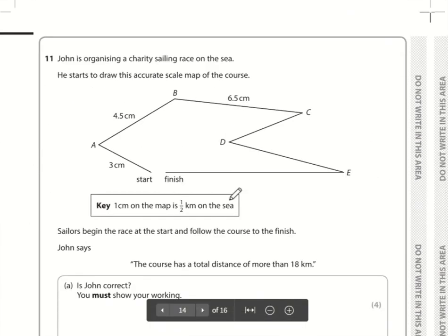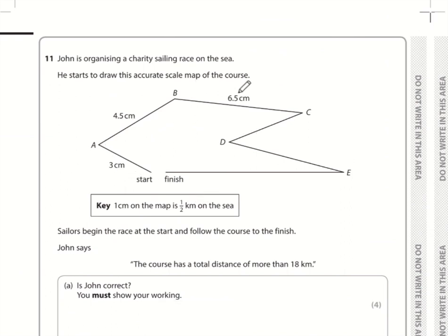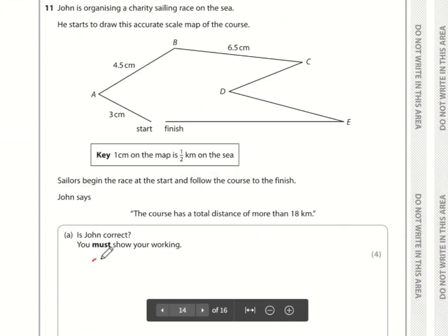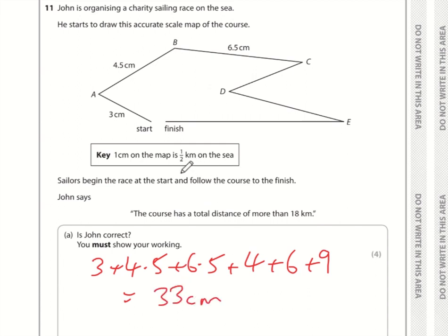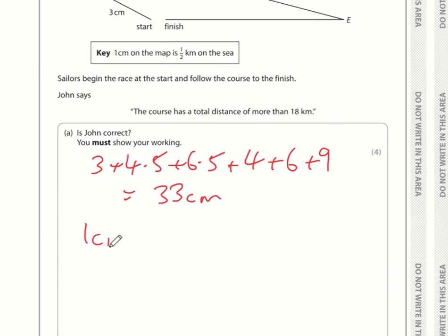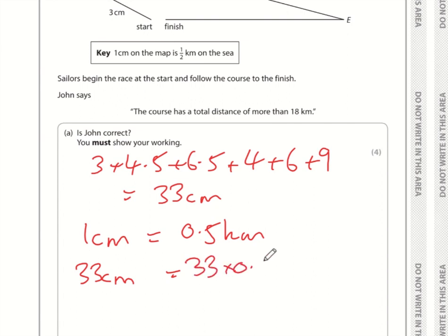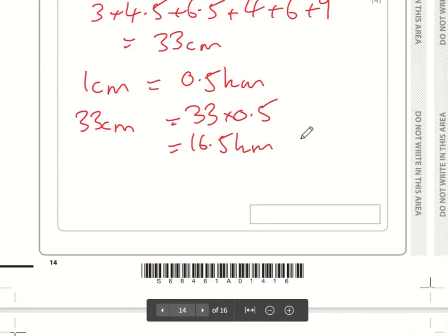Question eleven: work out the length of the course — 3 plus 4.5 plus 6.5, then measure D to C as 4, D to E as 6, and E to finish as 9 centimetres. Adding all values together: 33 centimetres total. One centimetre equals 0.5 kilometres, so 33 times 0.5 is 16.5 kilometres. George said the course is more than 18 km, but it's 16.5 km, so George is wrong.